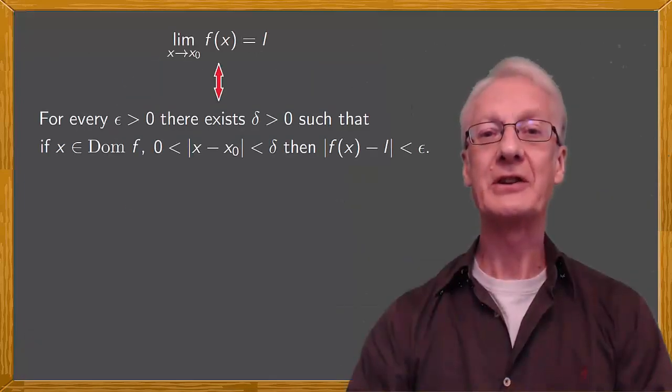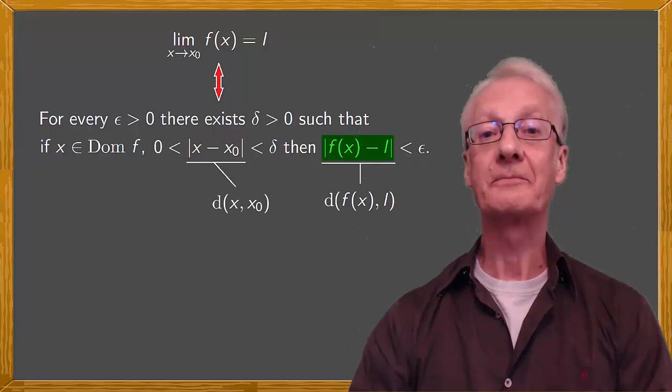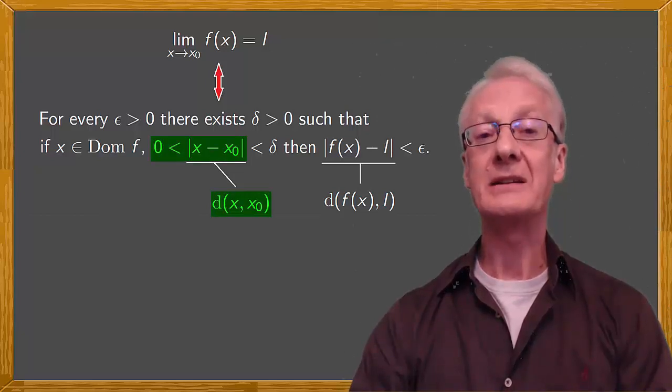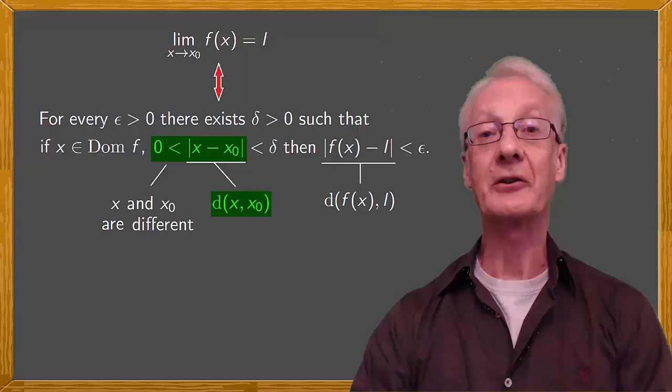If we now look at the definition of a limit it involves absolute values of subtractions. These give the distances from x to x0 and from f(x) to L. What does it mean that the distance between x and x0 is greater than 0? It means that the distance between x and x0 is different than 0. Or simply that x and x0 are different.